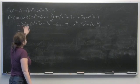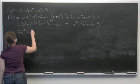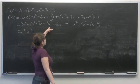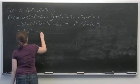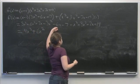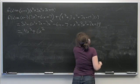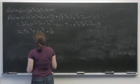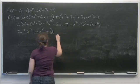Collecting like terms, we get 4x³ + 6x² + 8x + 12.